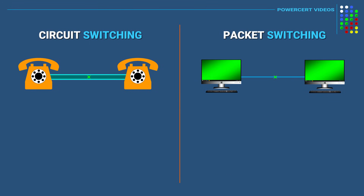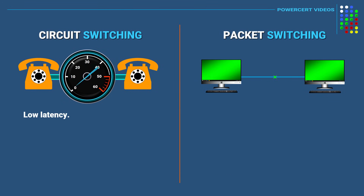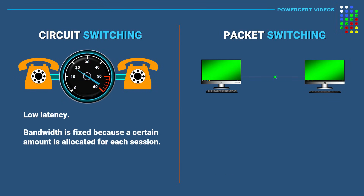Another difference is that in circuit switching there is low latency because the bandwidth is fixed. A certain amount of bandwidth is allocated for each session until the session is complete. However, the disadvantage of that is that because the bandwidth is fixed, it is not used efficiently because the sessions don't completely use all the bandwidth available.